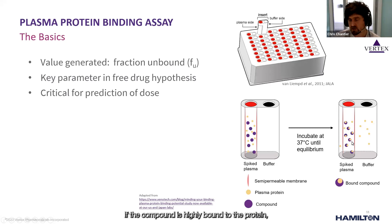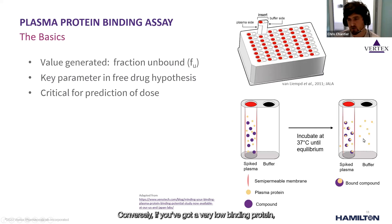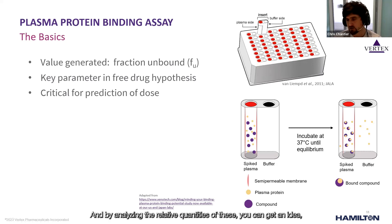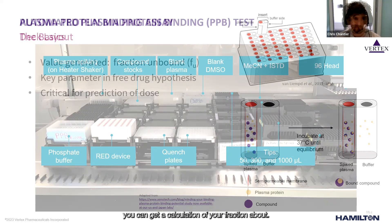If the compound is highly bound to the protein, it will remain stuck to the protein, which cannot pass through the membrane, so you get a very small concentration in the buffer. Conversely, if you have very low binding to the protein, you'll see much more compound in the buffer. By analyzing the relative quantities in each compartment, you can calculate your fraction unbound.